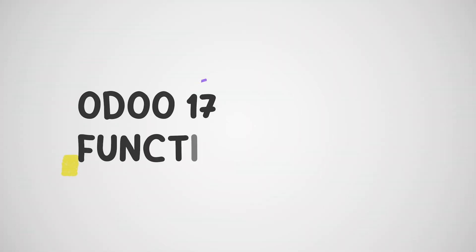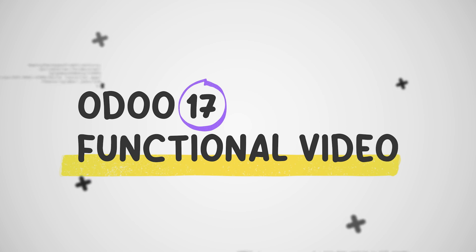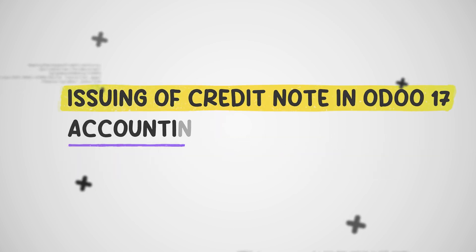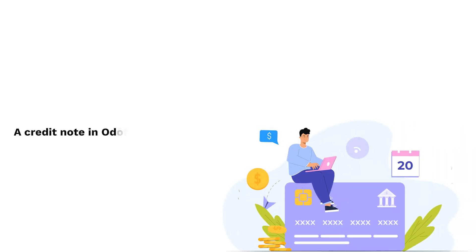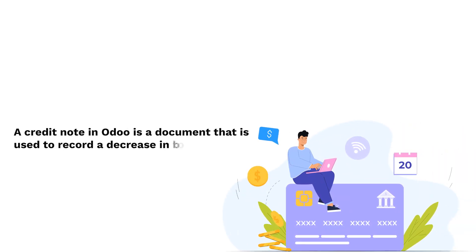Hey everyone, welcome back to new content of Cybrosis. In today's video we will be discussing the issuing of a credit note in Odoo. In accounting, a credit note in Odoo is a document that is used to record a decrease in the amount a customer owes to the business.